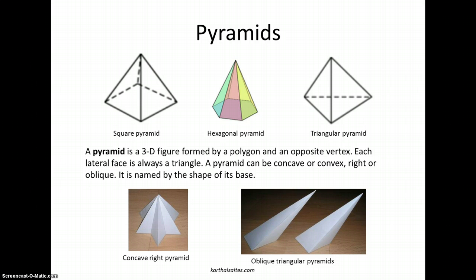Below we see a concave right pyramid. Concave because again it dents in. If we tilted this pyramid over on its side, the faces would not be able to kiss the table. We also have a pair of oblique triangular pyramids. Triangular because the base is triangular, and oblique because they too are leaning.